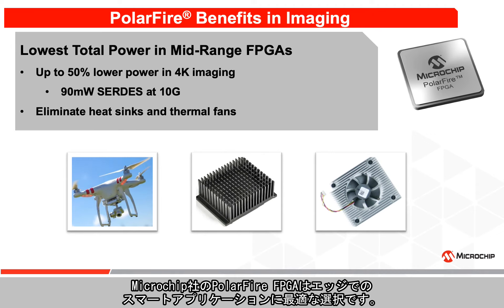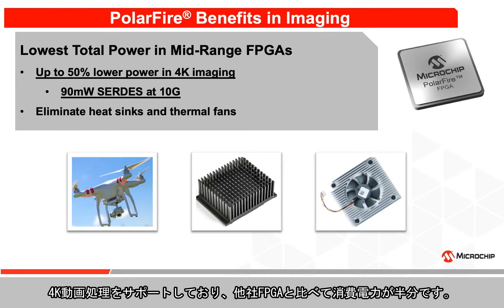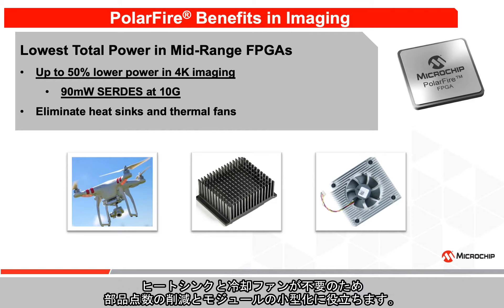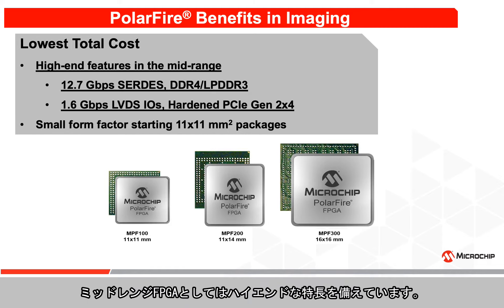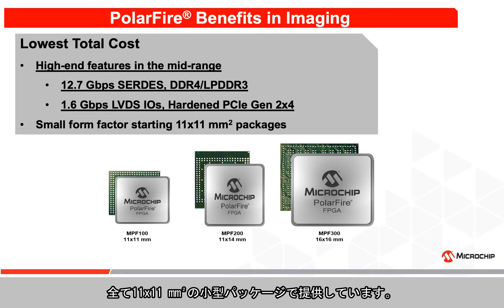Microchip's PolarFire FPGAs are a perfect choice for smart applications on the edge. They support 4K video processing and consume 50% lower power compared to similar FPGAs. This helps reduce your bill of materials and module size by eliminating heat sinks and cooling fans. PolarFire offers high-end features in mid-range FPGAs like 12.7 gigabit per second SerDes, DDR4 memory support, 1.6 gigabit per second LVDS IOs, and hardened PCIe Gen2 x4 root port and endpoints. All of this is offered in packages as small as 11 by 11 millimeter square.